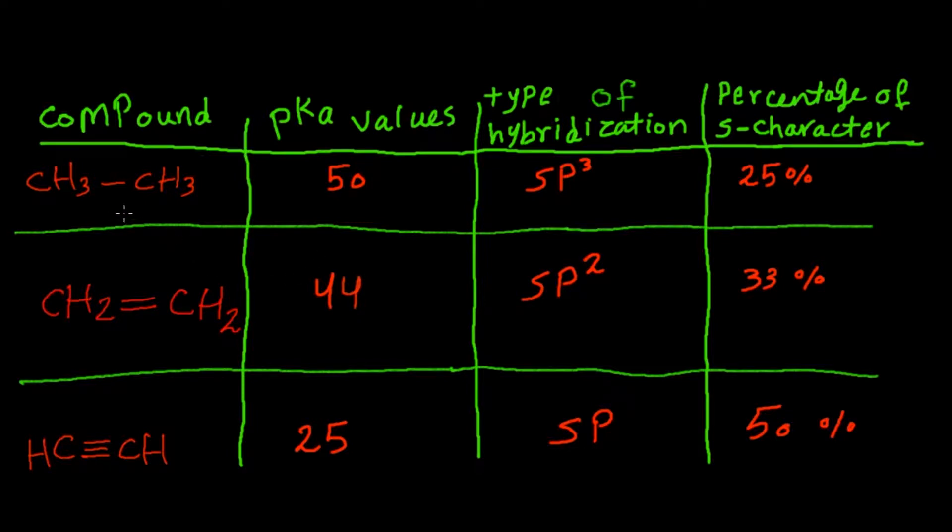In this table we want to compare the acidity of the three compounds based on the type of hybridization of the orbitals. So here in ethane the type of hybridization is sp3. When we calculate the percentage of the s orbital character here we found out that it's 25%.